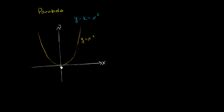Another way of thinking about it: this quantity is 0, and if it's k less than y, then y must be at k. So at least for this point, it had the effect of shifting up the y value by k. That's true for any of these values. For any x, x squared gets you to y minus k, meaning y must be k higher than what x squared gives you.